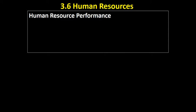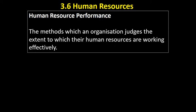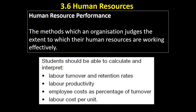These are their KPIs — key performance indicators — that we can measure to give us some indication of how the workforce is performing. Human resource performance covers the methods by which an organization judges the extent to which their human resources are working effectively and helping the business achieve its corporate objectives. The AQA specification identifies five measures — or six if you count labor turnover and retention rate as two separate calculations. Importantly, you need to be able to calculate them, so you need the formulas for all of these things.